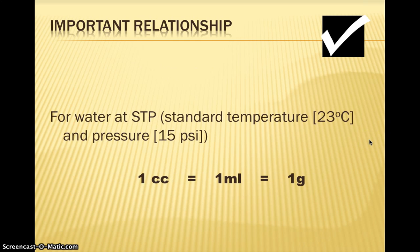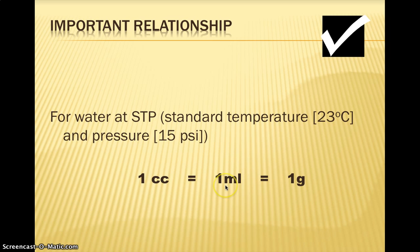Another important relationship to remember is equivalent units. For standard temperature and pressure on the surface of the Earth, one cubic centimeter is equal to one milliliter, and that's equal to one gram. You can use all of these interchangeably. On the AP exam, you might see one cubic centimeter — that's the same thing as one milliliter. And one milliliter is the same thing as one gram when we're talking about water. If temperature or pressure changes, these volumes can expand and will no longer be equal, but normally these are equal measurements for water.